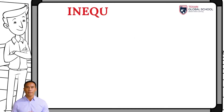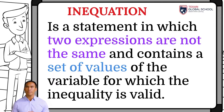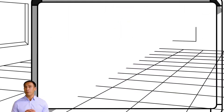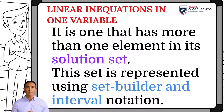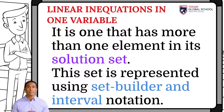From the concept of inequality follows the concept of inequation. An inequation is one that contains a certain set of values of the variable for which the inequality is valid. A linear inequation in one variable has more than one element in its solution set. This set is represented using set builder and interval notation seen in previous classes. They are essentially solved the same as equations; the only difference is that we must be careful when multiplying by a negative number, since the sign will need to be reversed.